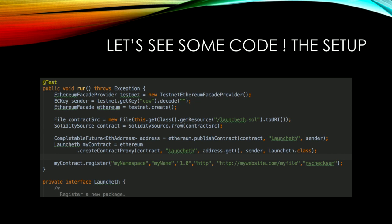Looking at the code example: I'm working on a decentralized app store where you have your organization and can publish a way to get an application. Here would be the HTTP URL to download the application. The idea is you can put HTTP, IPFS, BitTorrent — whatever you want — but it's always the same checksum to make sure we are always talking about the same binary.